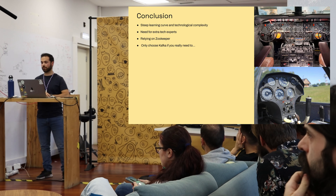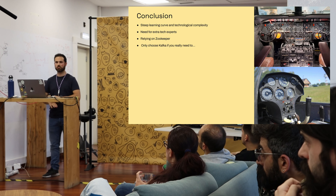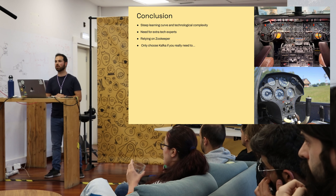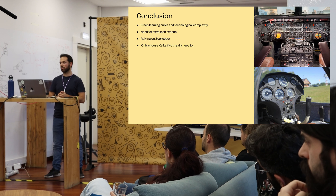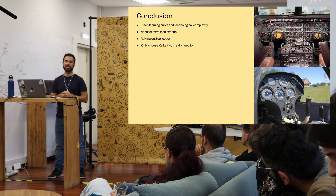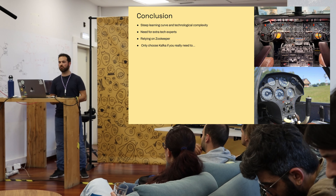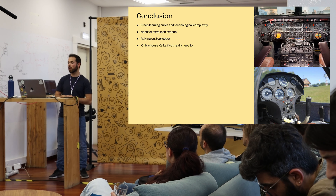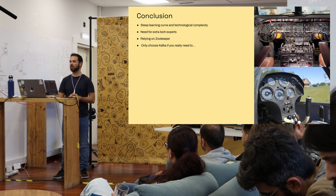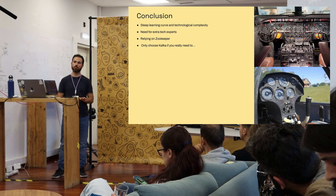To conclude: Kafka has many competitors — RabbitMQ, cloud pub/sub services. Kafka has a steep learning curve; there's a lot to learn and things won't always work as expected. You likely need a dedicated team to support Kafka full time because it's the core of your business infrastructure. A downside is the current dependency on Zookeeper, though that's going away. My advice: only choose Kafka if you really need it. If you don't, go with something simpler.